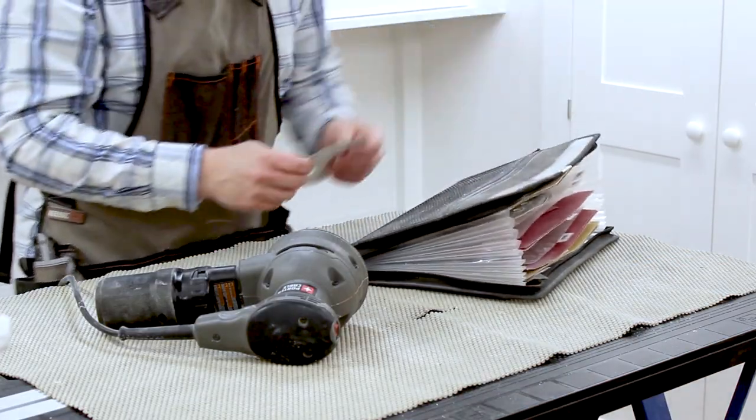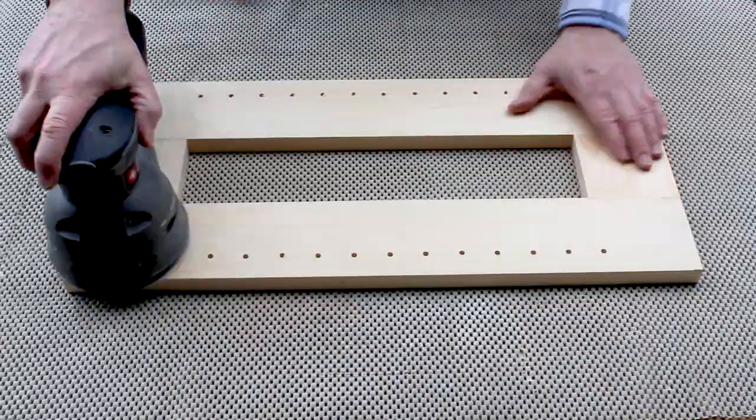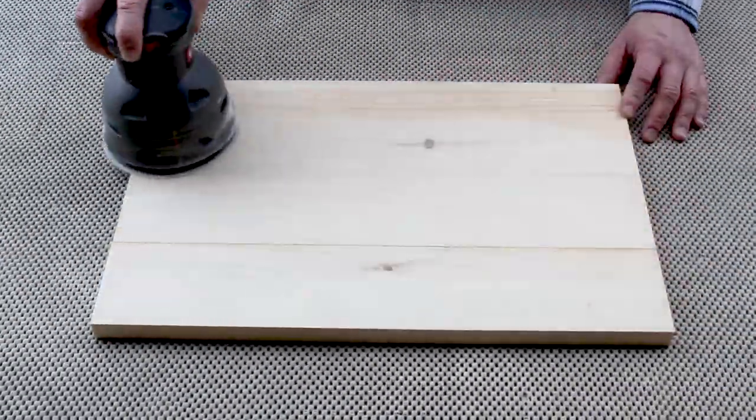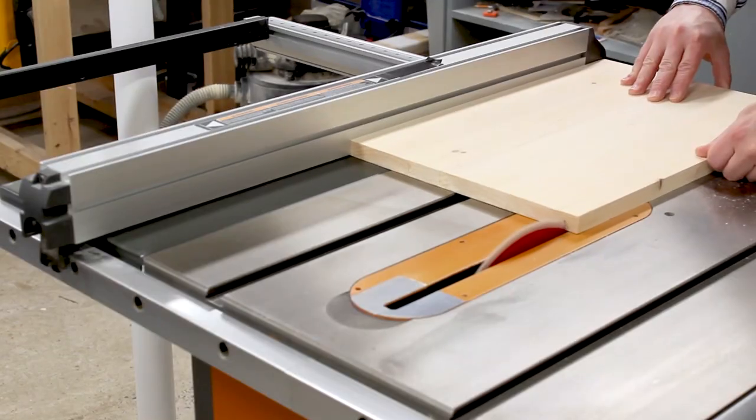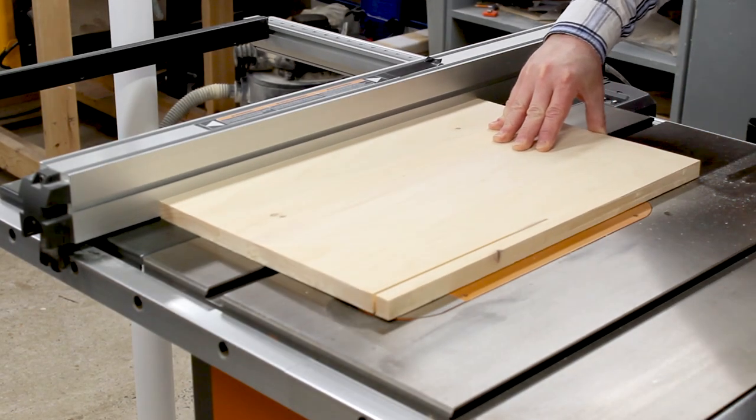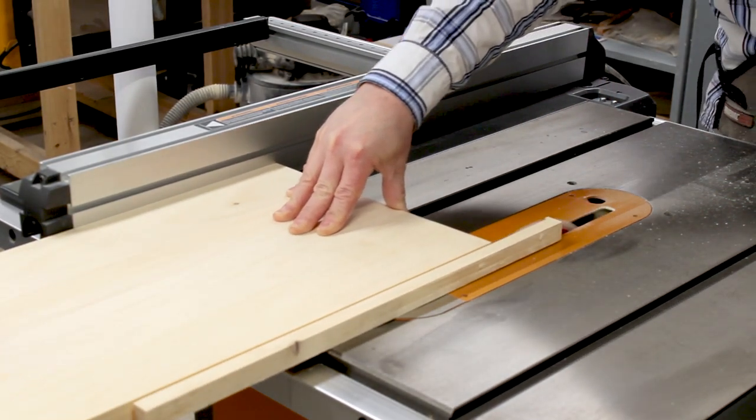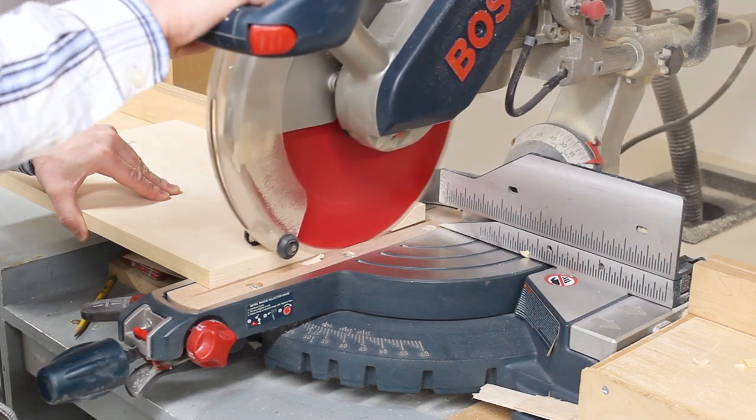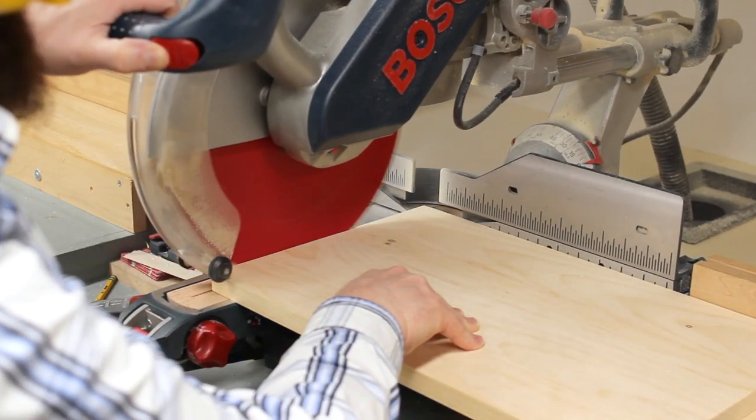Before I started the final assembly, I sanded all of the parts. Back at the table saw, I ripped the shelf to 11 and a half inches wide. I used the miter saw to square up one end of the shelf, and then cut the shelf to 18 and 3 eighths inches.